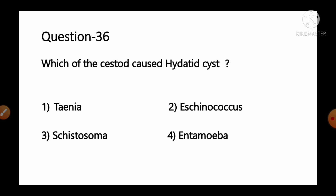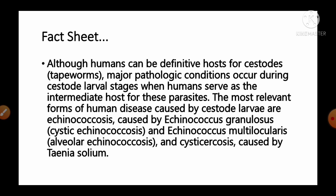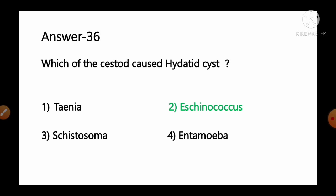Question number 36: Which of the following cestodes causes hydatid cysts? Options: 1) Taenia, 2) Echinococcus, 3) Schistosoma, 4) Entamoeba. The most relevant form of human disease caused by cestode larvae is echinococcosis, caused by Echinococcus granulosus and Echinococcus multilocularis, and cysticercosis caused by Taenia solium. So option number 2, Echinococcus, is the correct answer.